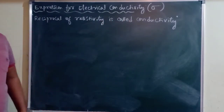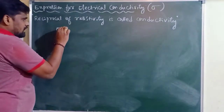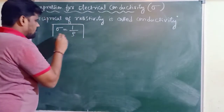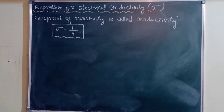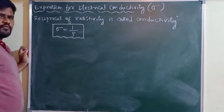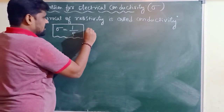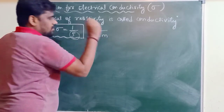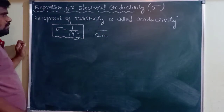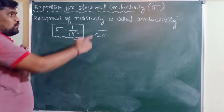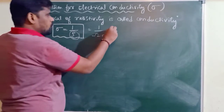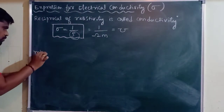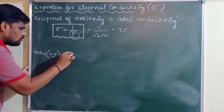We call it electrical conductivity. Mathematically, sigma can be written as 1 by rho. The SI unit of resistivity is ohm meter. So the SI unit of conductivity is 1 divided by ohm meter. 1 divided by ohm we call mho. Mho is equal to 1 by ohm.